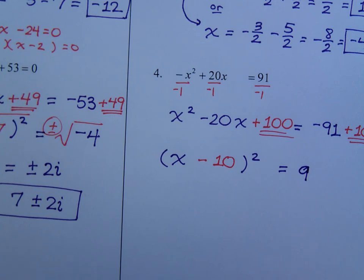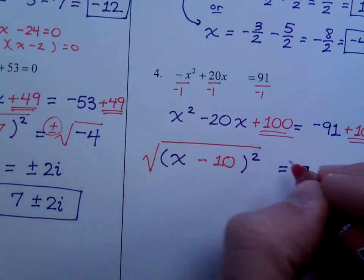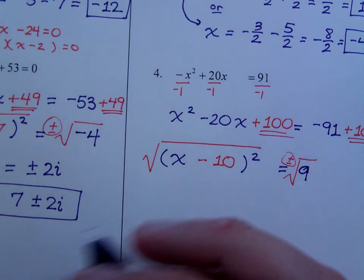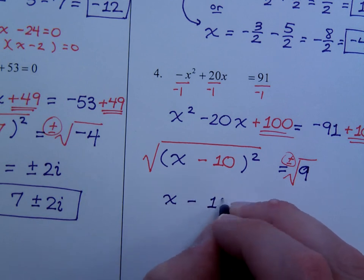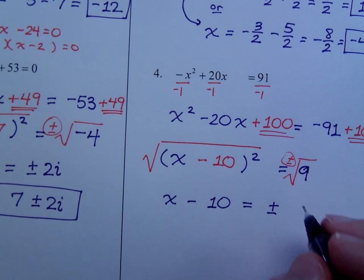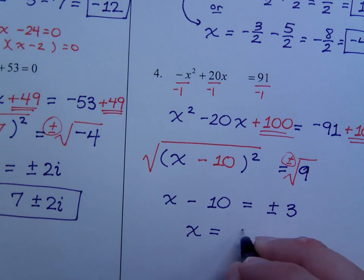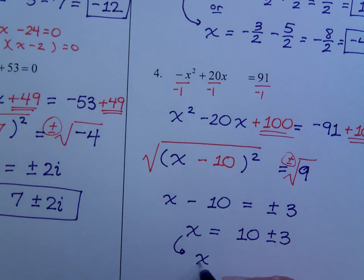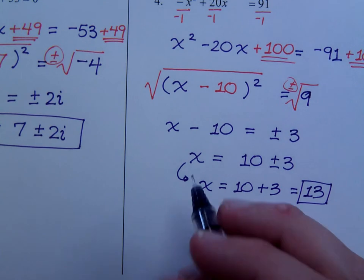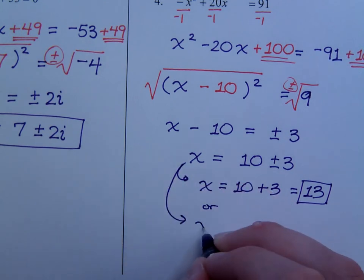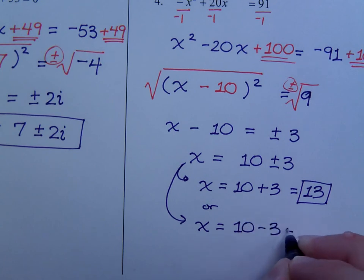And now, I take the square root of both sides using that square root property. Don't forget the plus or minus. So, x minus 10 equals plus or minus, and the square root of 9 is just 3. So, when I get x by itself, that's positive 10 plus or minus 3, you see, again, I don't have anything radical or imaginary. So, I need to separate this. So, x is equal to 10 plus 3, which is 13. Or, the other solution, x is equal to 10 minus 3, and that equals 7.